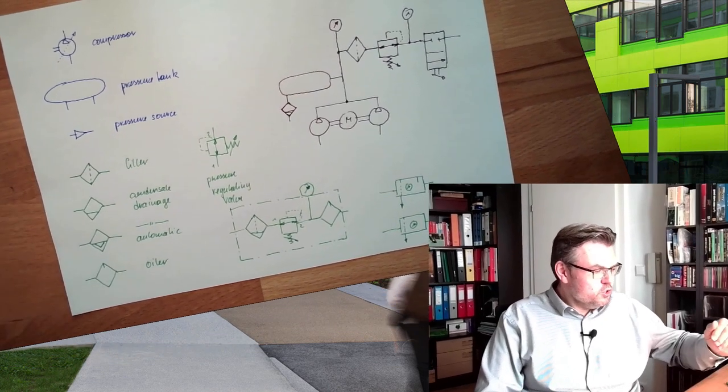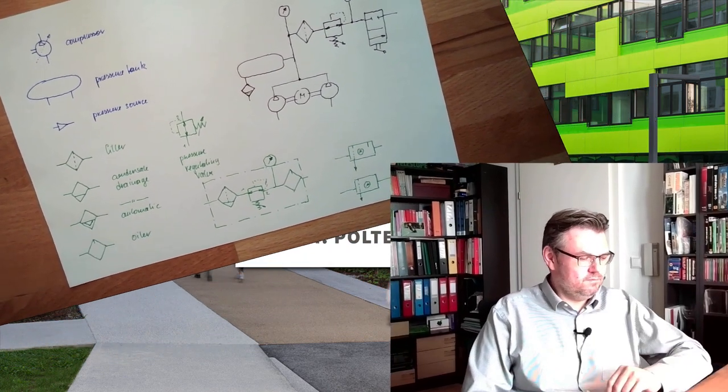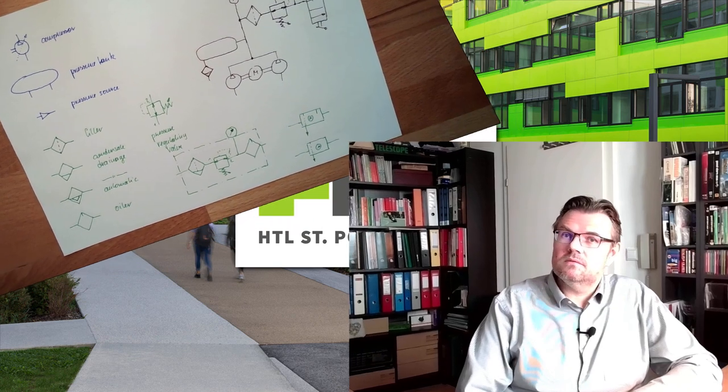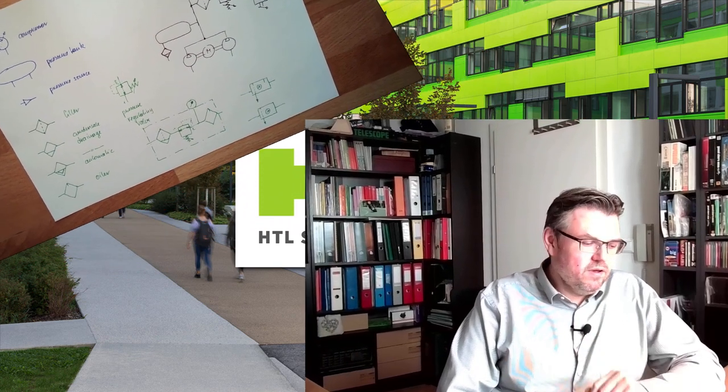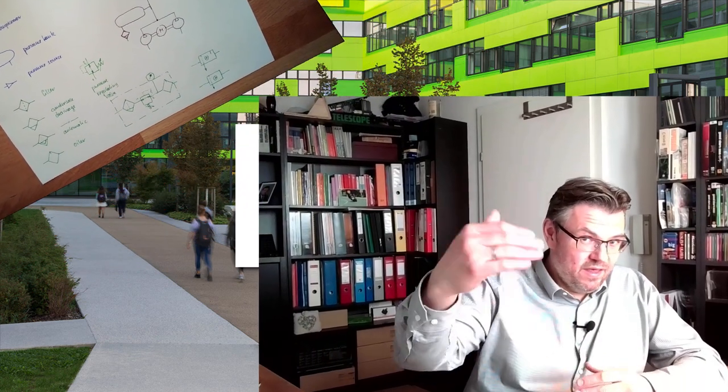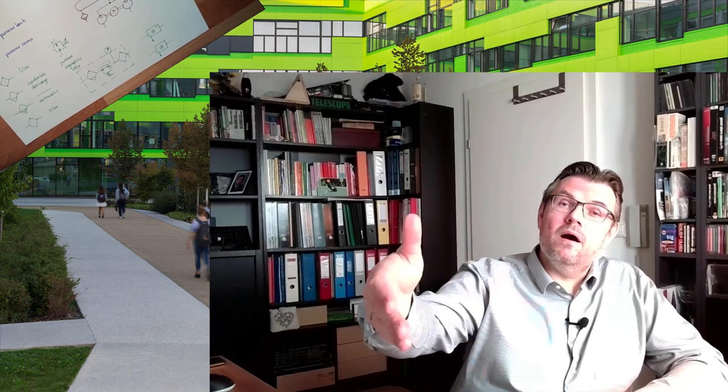So, symbols used for the power part. Next time we are going to talk about the other end, the working part. And the most important working element there is, of course, the cylinder. Next time we are talking about cylinders, what possibilities are there, how they are working and so on. For this time, thank you very much for listening. Goodbye.